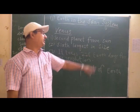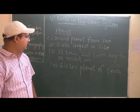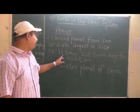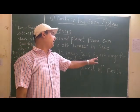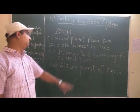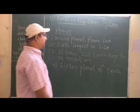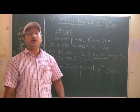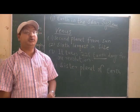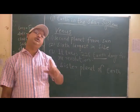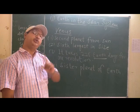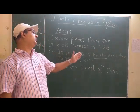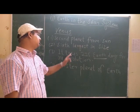Venus is the sixth largest planet in size in the solar system. Venus takes 225 Earth days for one revolution. We know that Earth takes 24 hours to complete one single day, so just imagine — Venus takes 225 Earth days for one revolution.